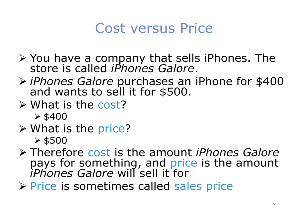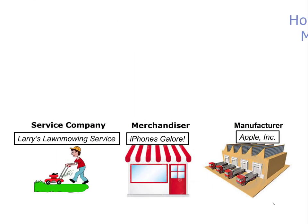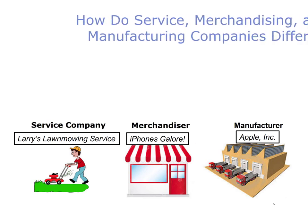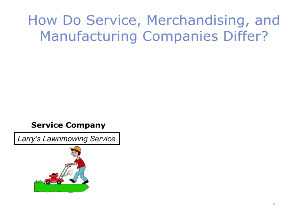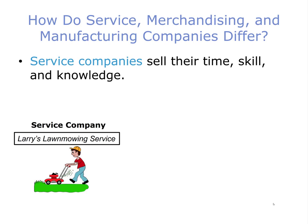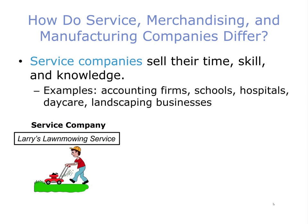Price is sometimes called sales price. Now we'll discuss the differences between service, merchandising, and manufacturing companies. We'll start off with the easiest to understand: service companies. Service companies like Larry's Lawn Mowing Service sell their time, skill, and knowledge. Examples include accounting firms, schools, hospitals, daycare, and landscaping businesses like Larry's business. Accounting for service companies is the simplest of the three.